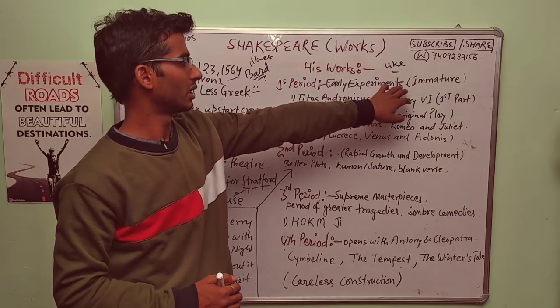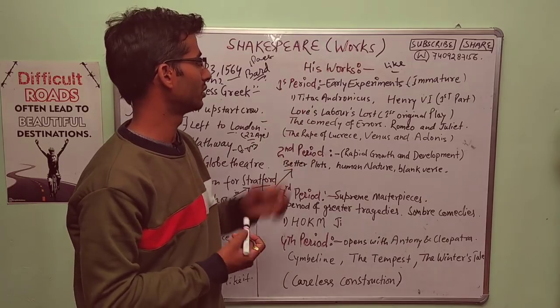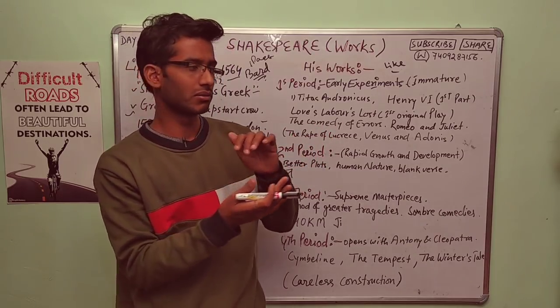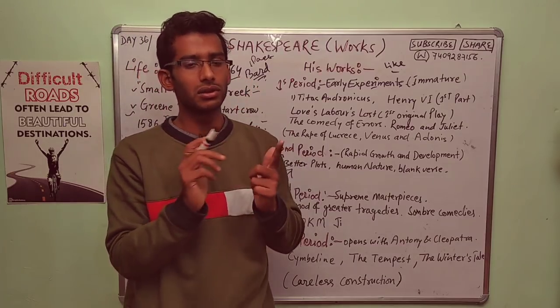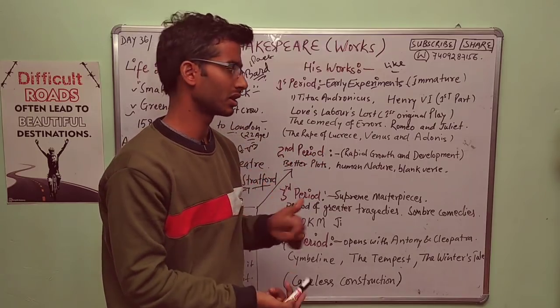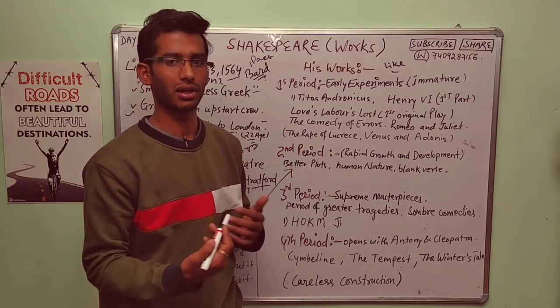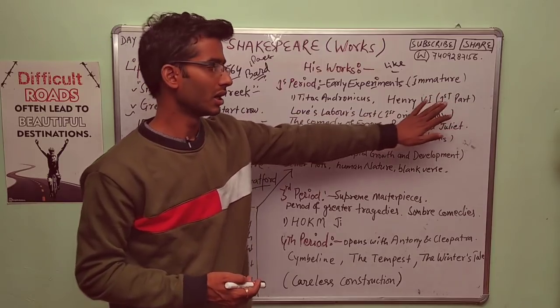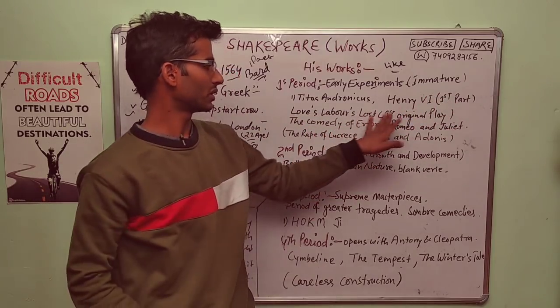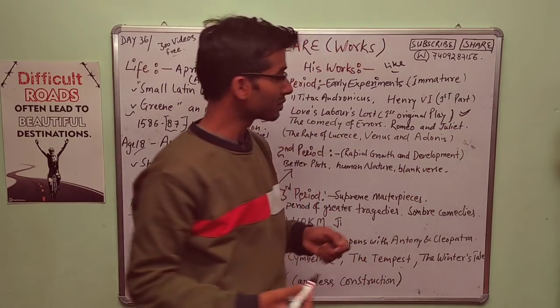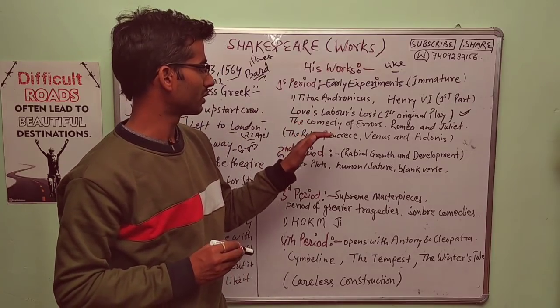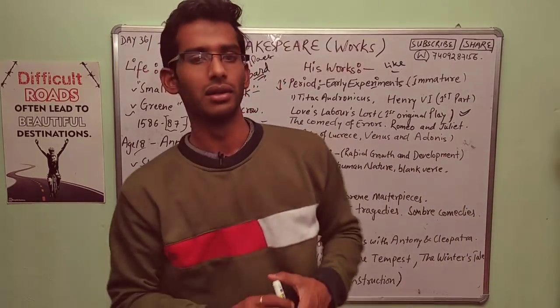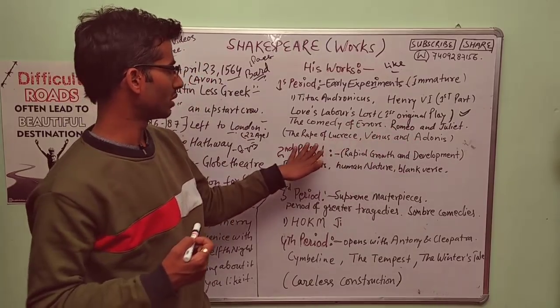His works: first period, early experiments. He was kind of immature, just doing experiments with his work and studying the works by university wits. First period: Titus Andronicus, Henry IV, and next one is Love's Labour's Lost. This was his first original play. Then The Comedy of Errors, Romeo and Juliet, The Rape of Lucrece, and Venus and Adonis, the poetry we see here.